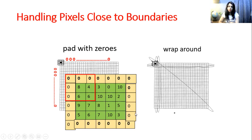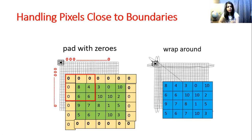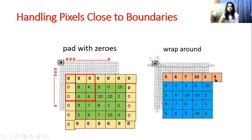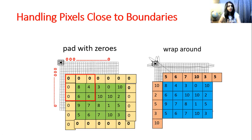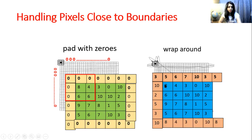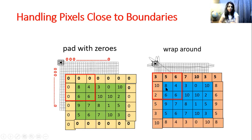In wrap-around, we take the bottom row and use it as the top row, and the corner pixel 5 becomes the top right corner pixel. Similarly, the rightmost column is placed in the leftmost position, and pixel 3 goes to the corner. The top row can be brought to the bottom row and the left column to the right column, and then we can replace the central pixel after convolution.